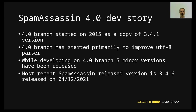The UTF-8 improvement was needed to better check emails that are not written in plain English and in languages that cannot be represented using only ASCII characters. While developing in the 4.0 branch, 3.4 releases continued, and five minor versions of 3.4 were released. The most recent is 3.4.6, released last December.